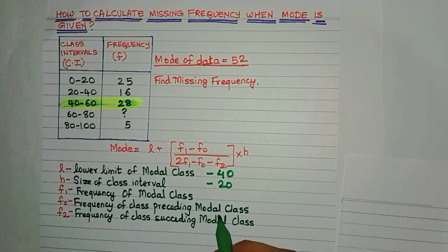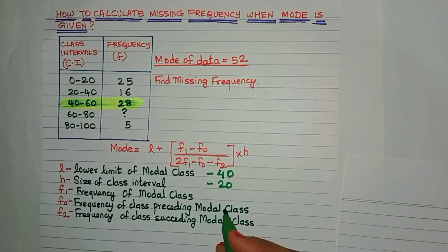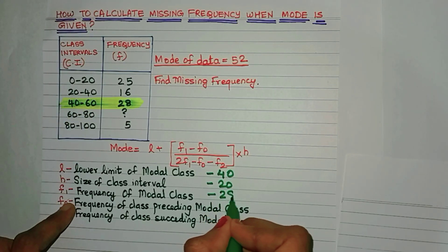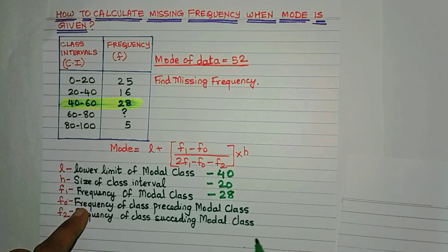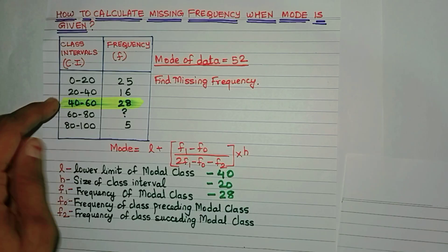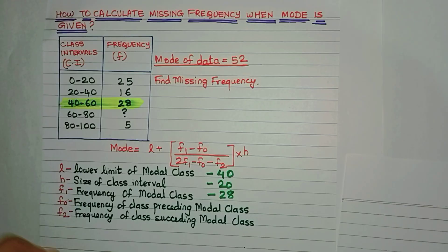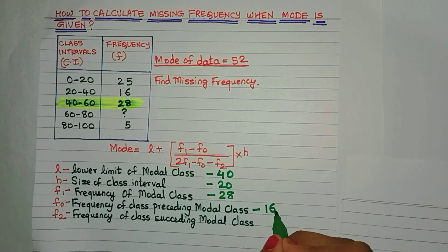Now F1 is the frequency of the modal class. So here is the modal class. What is the frequency? 28. So F1 is 28. Now F0 is the frequency of the class that comes just before the modal class. So here is this class 20 to 40 that is just before the modal class. What is its frequency? 16. So F0 is 16.